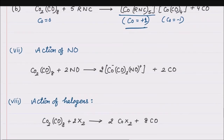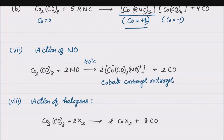Action of NO: Co2(CO)8 reacts with NO at 40 degrees Celsius to form cobalt carbonyl nitrosyl, where NO is in the +1 oxidation state and cobalt is in the -1 oxidation state. In this reaction, the oxidation state of cobalt decreases from 0 in the carbonyl to -1 in the nitrosyl.